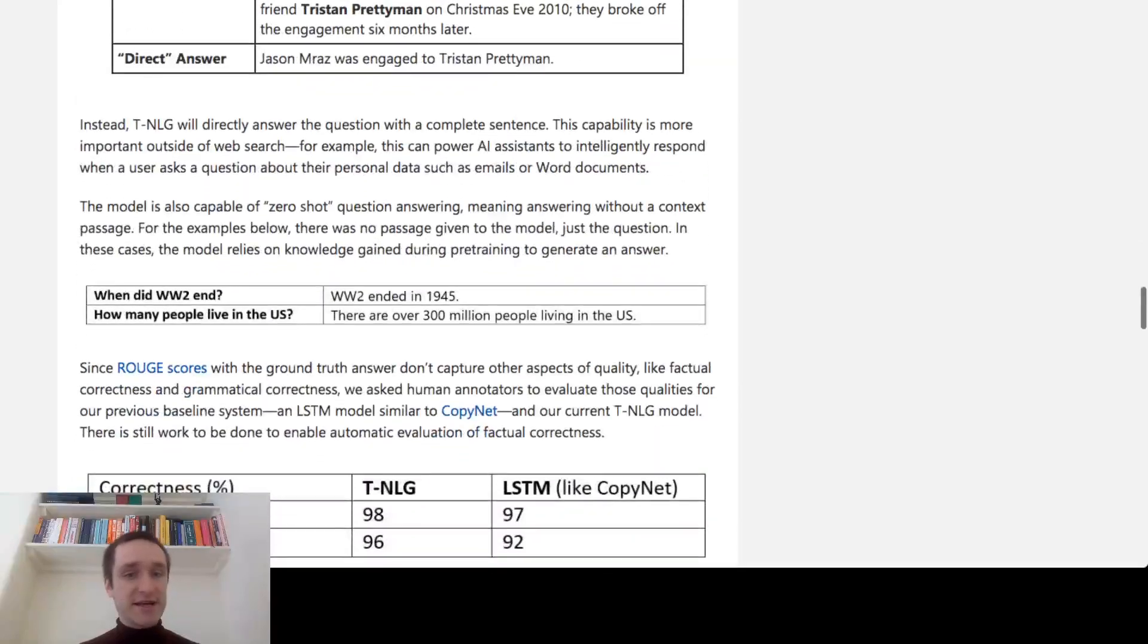Zero-shot questions is answering questions without giving any context. For example, they did this with 'When did World War II end?' and the machine is able to answer right away that World War II ended in 1945.